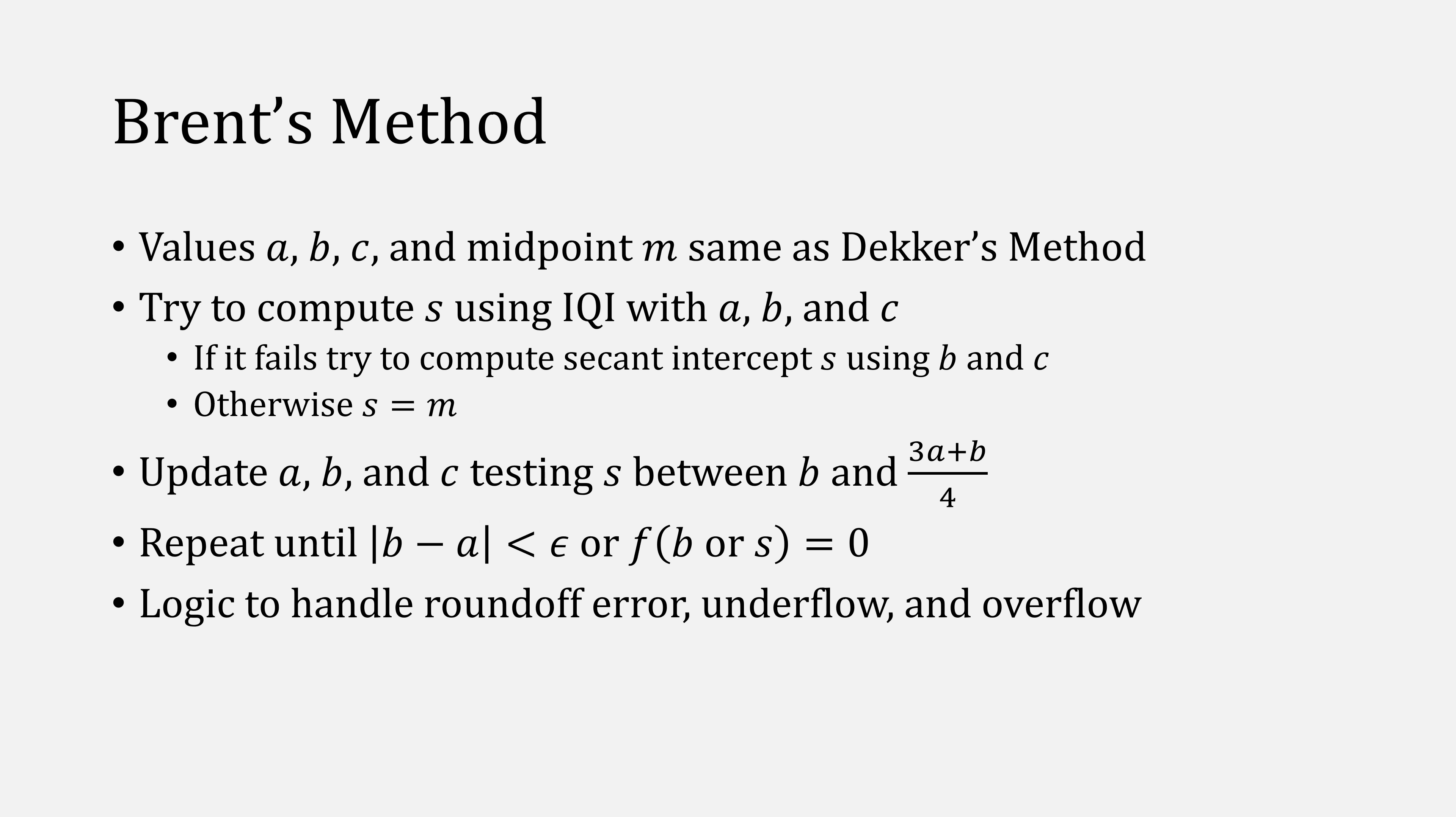There's also logic similar to Dekker's to handle roundoff error. And for most cases, this is really all you need for Brent's method. But Brent's goes one step further. It also handles ill-behaved functions by adding another variable, D, which is the previous value of C.